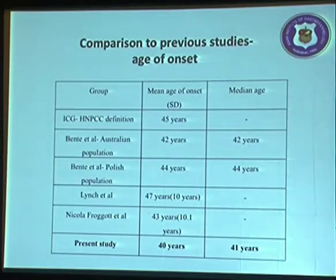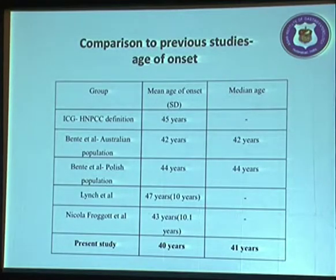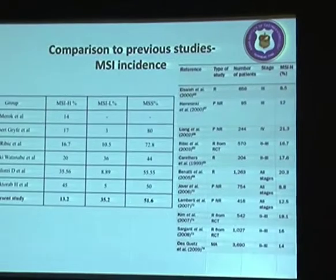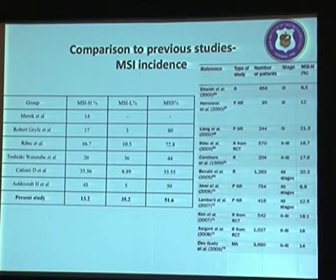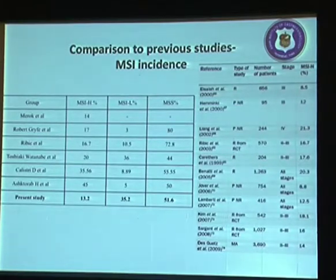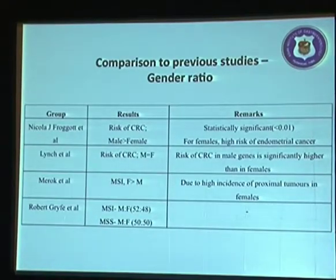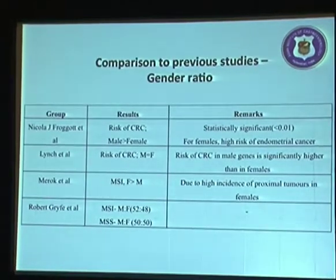Comparing these results with prior studies: the ICG-HNPCC, Bente Ital studies, and Australian and Polish population studies all show a mean age of 40 to 44 years. The present study shows a mean age of 40, which is in accordance. The microsatellite instability incidence in previous studies ranges from 14% to 35%; the present study shows 13%, also in accordance. Regarding gender, some prior studies show male predominance and others female predominance, but the present study shows predominantly male involvement.